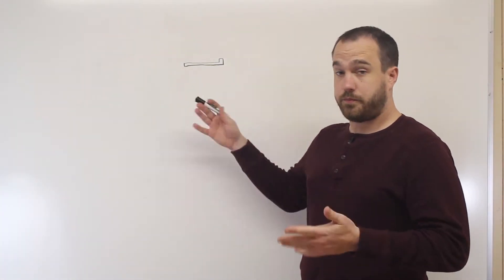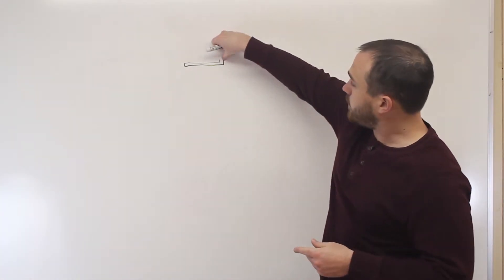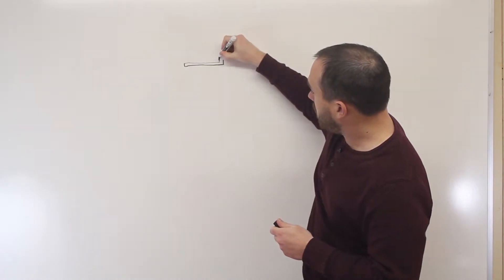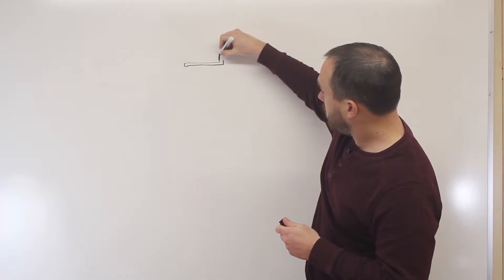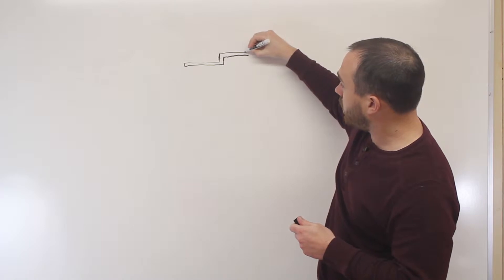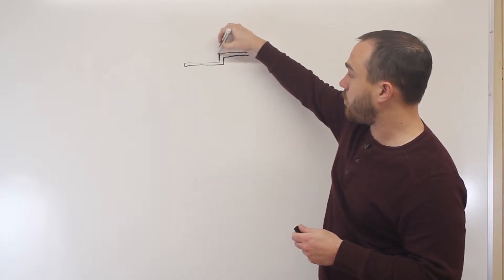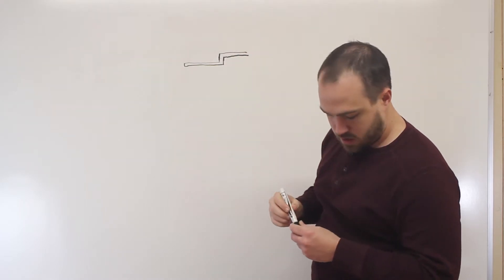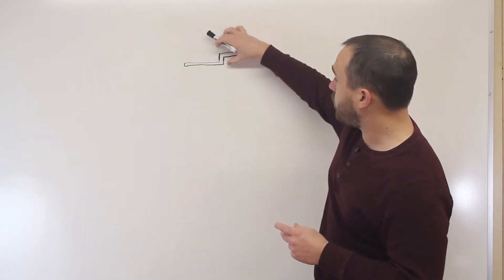Another similar usage of this is sometimes people will want to make a Z bracket that goes up like that and then over, and you still have the same issue. There's not enough material to grab a hold of here to make that first bend, or actually the problem is with the second bend.